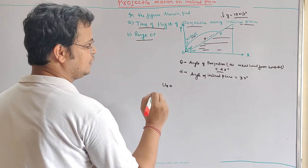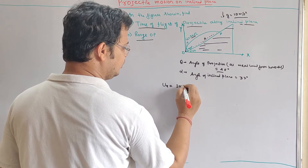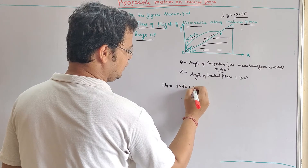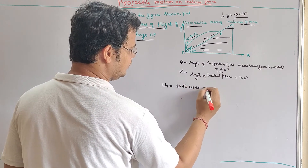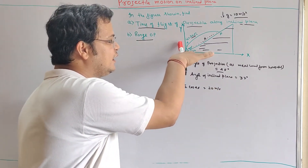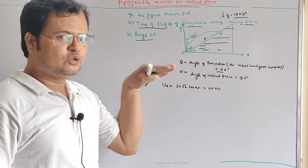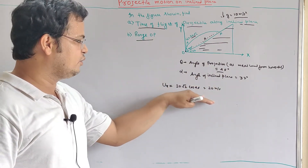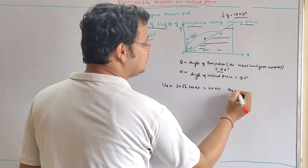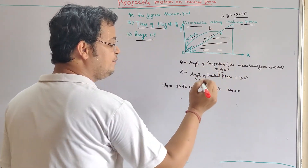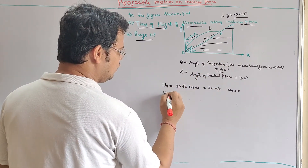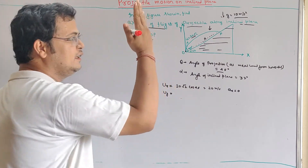The x-component of the velocity of the projectile is: u is 20 root 2 at angle 45 degrees to the x-axis, so u_x becomes 20 meters per second. In the horizontal direction, there is displacement, but in this direction the acceleration is zero because the only acceleration is g acting downward. So acceleration in x is zero.